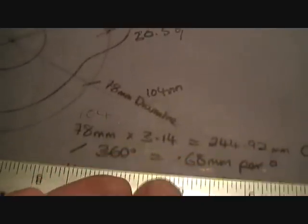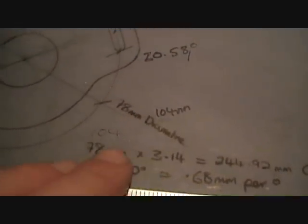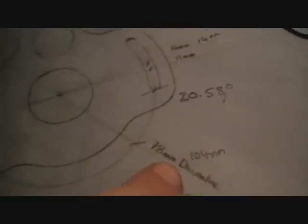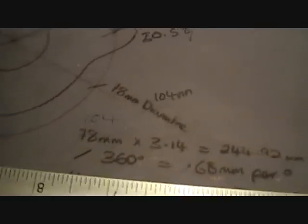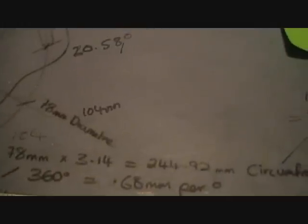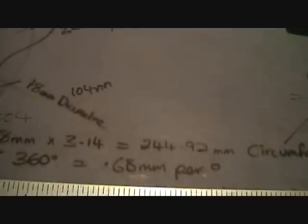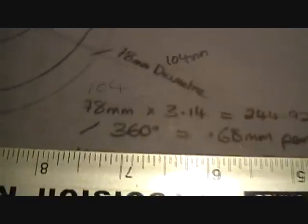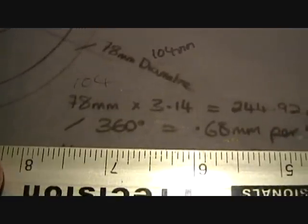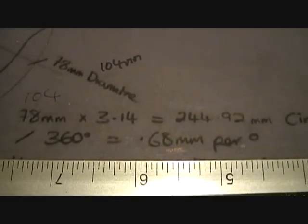That's quite easy to work out. All we need to do is get the diameter of the stator plate, and that is 78 millimeters. So 78 multiplied by 3.14—that works out at 244, the circumference of the stator plate. Divide that by 360 and that will leave you with 0.68 millimeters per degree.